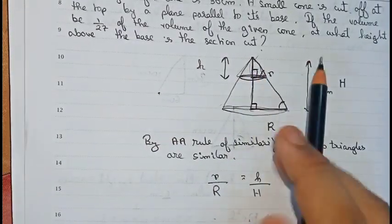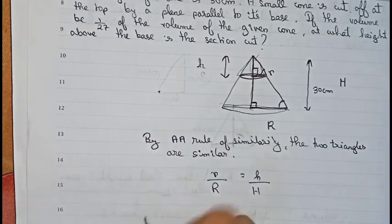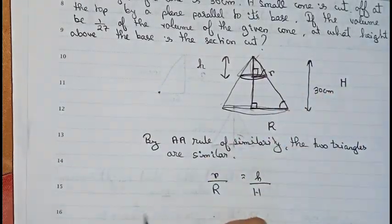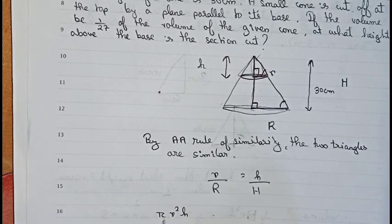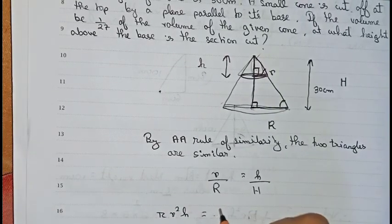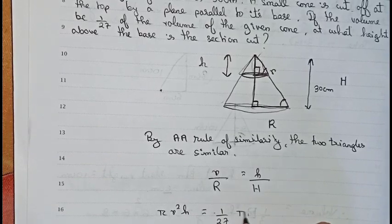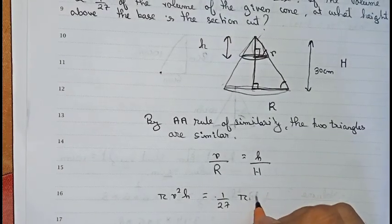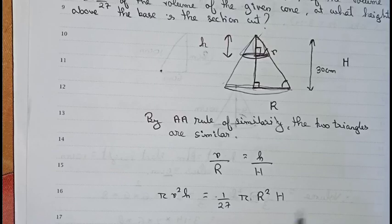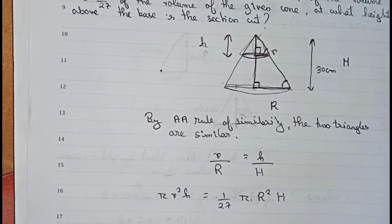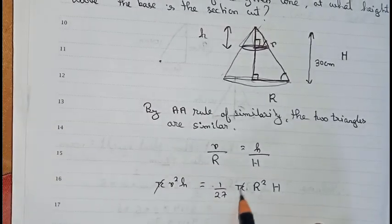The small cone's volume is (1/3)π r² h, and this equals 1/27 times the volume of the bigger cone, which is (1/3)π R² H. We cancel π and (1/3) from both sides, so r² h = (1/27) R² H.